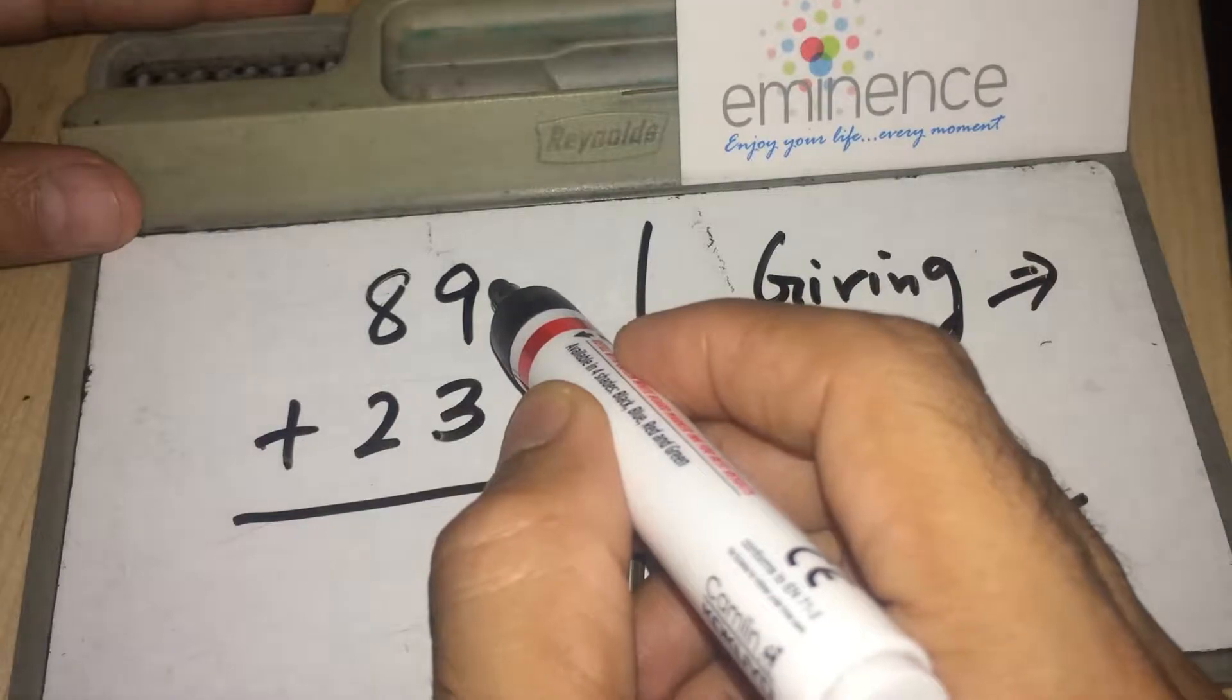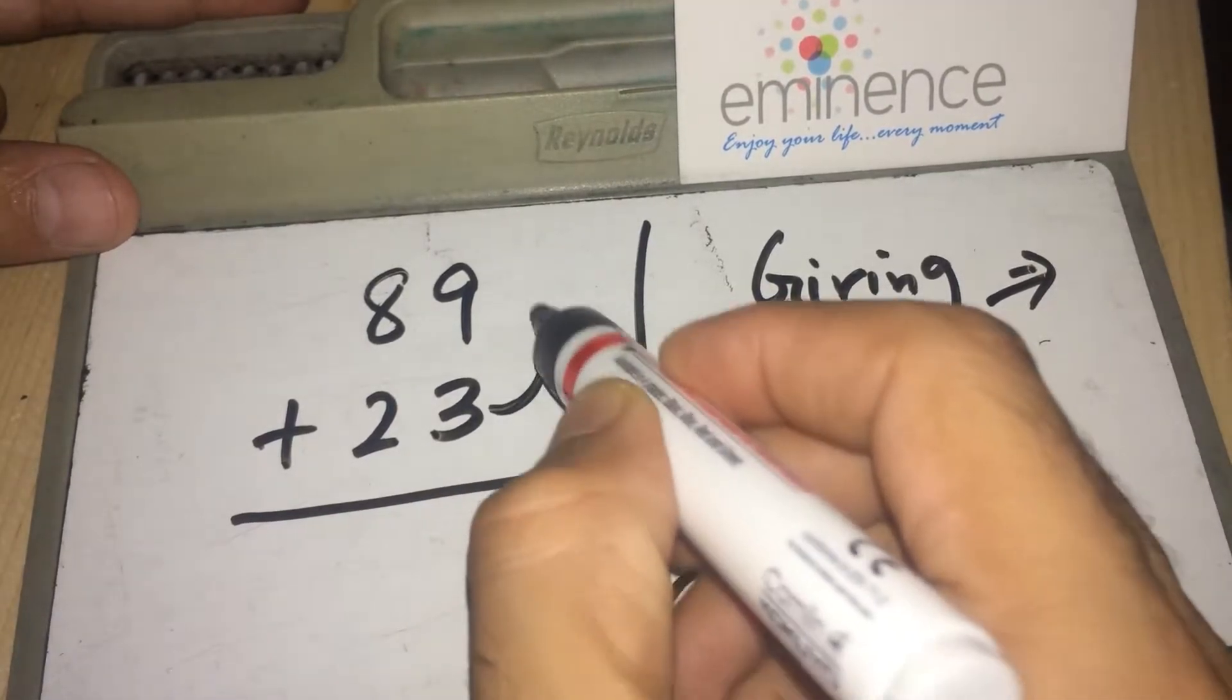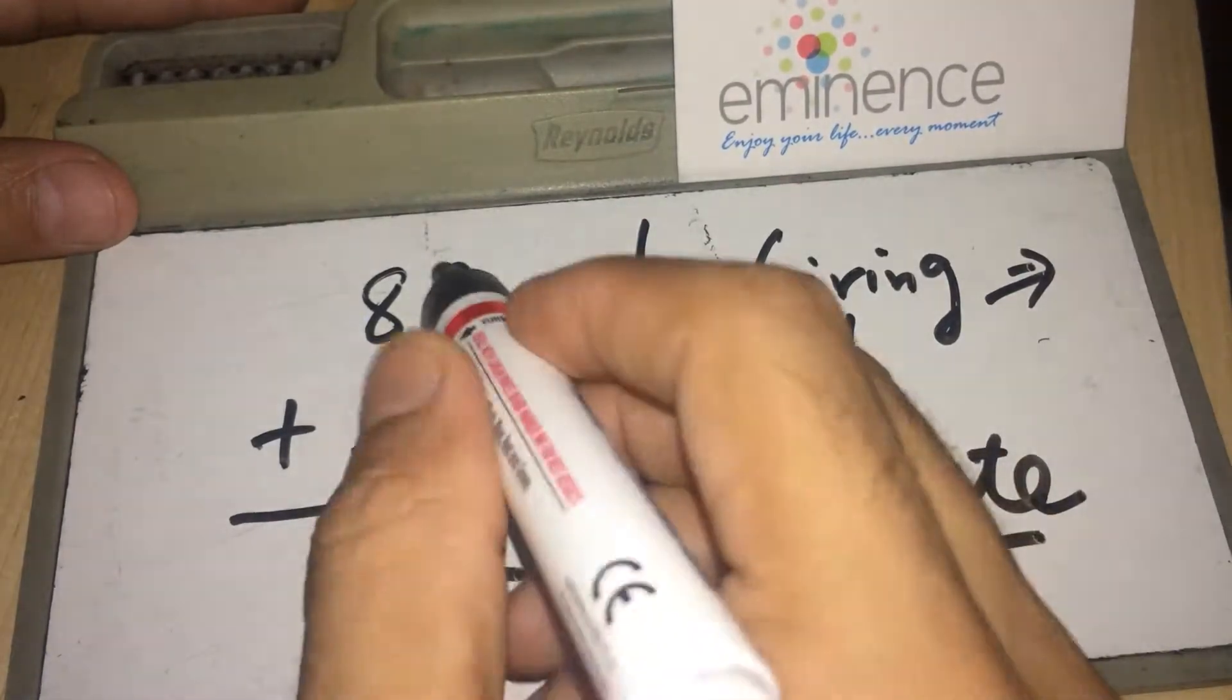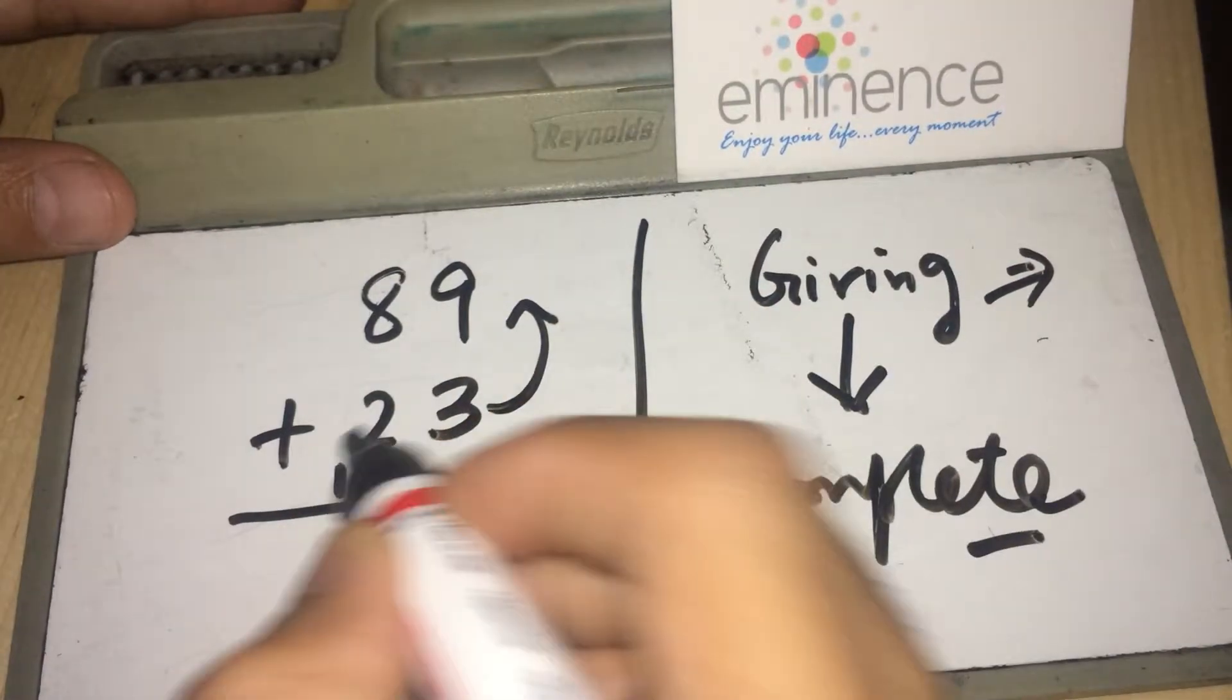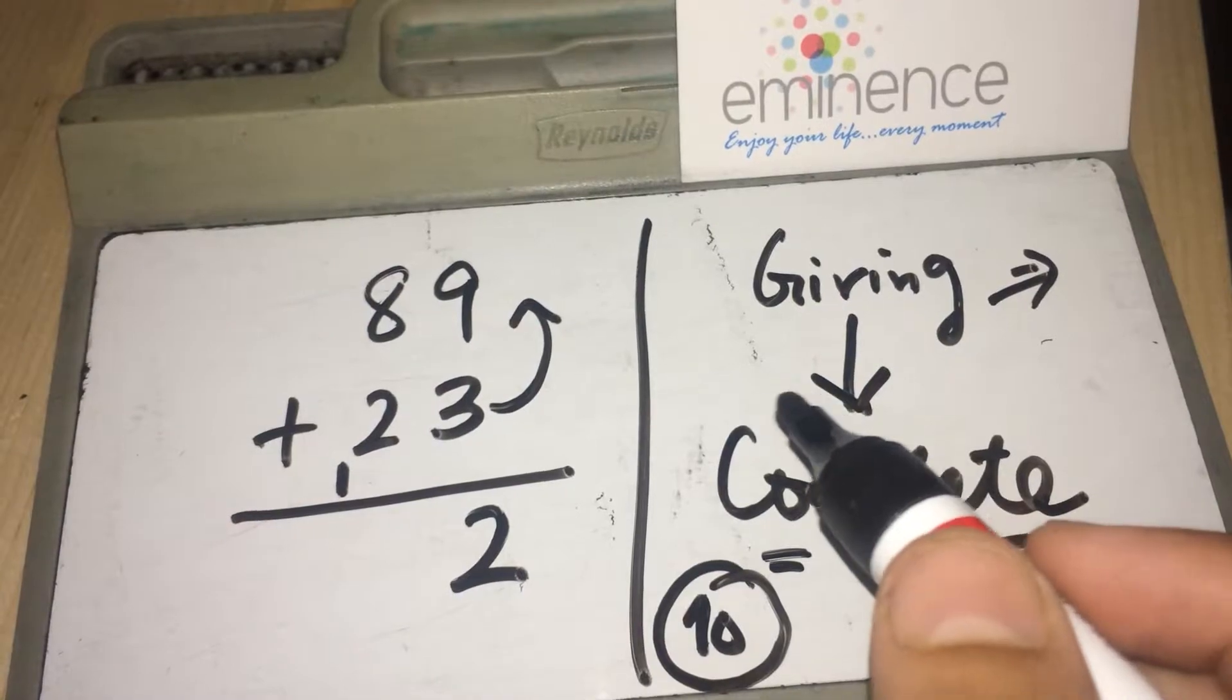9 needs 1 to get completed, so 3 gives 1 and what remains of 3 is 2. And when this series gets completed, you simply write 1 on the left hand portion.